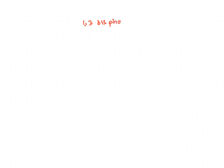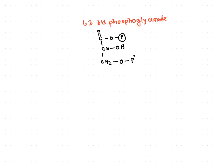Let's draw the structure of 1,3-bisphosphoglycerate. In the structure, there is a phosphate group at the first carbon and at the third carbon — so there are two phosphate groups here.